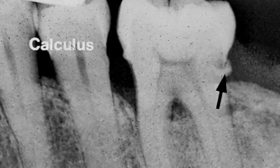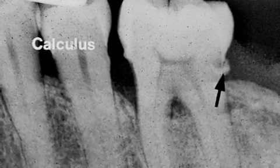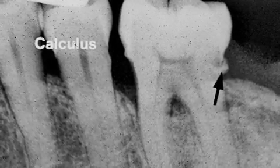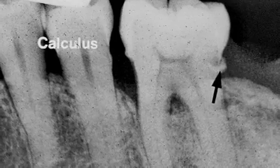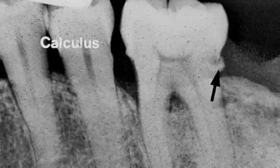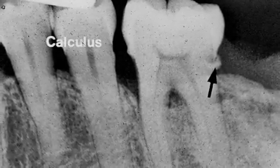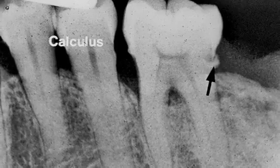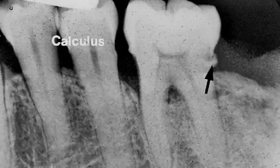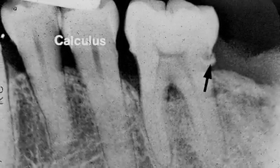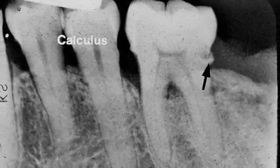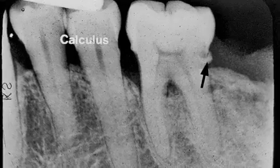Here we see calculus. It appears radiopaque on the x-ray. Can you find other areas of calculus? The density of calculus determines whether it is seen on an x-ray, as well as the angle.